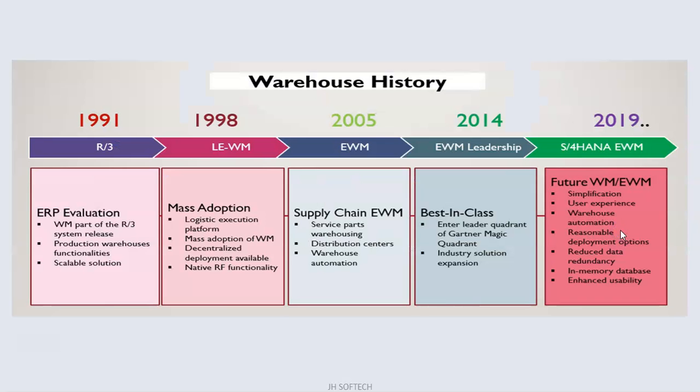Starting with the warehouse history: in 1991 we had R3. In the 1990s, the real-time three-tier SAP ERP software was very popular. In that ERP evolution, we had Warehouse Management as part of the R3 system, with production warehouse functionalities and scalable solutions. In 1998, mass adoption happened in LEWM — the logistics execution platform — with mass adoption of Warehouse Management, decentralized deployment, and native RF functionality.